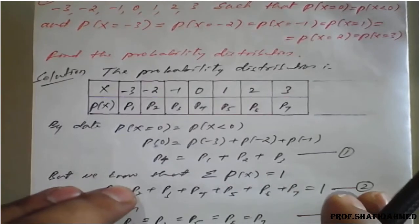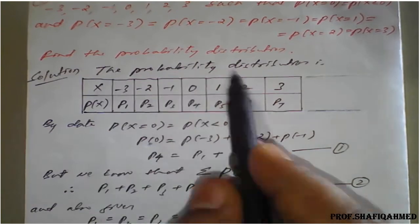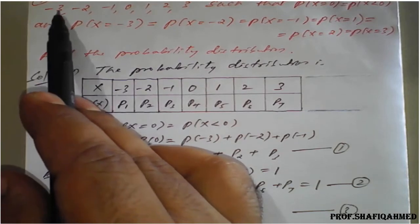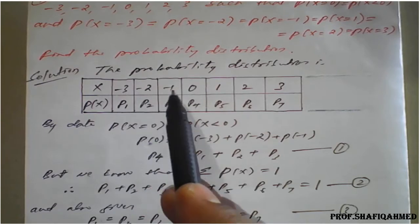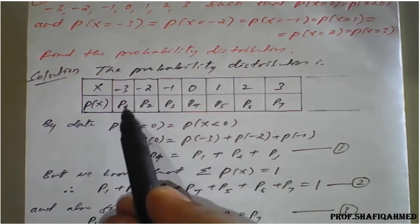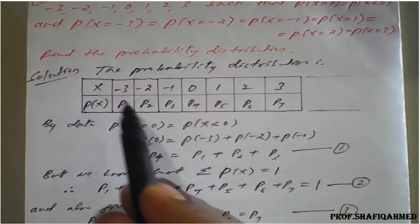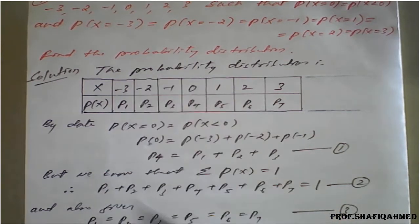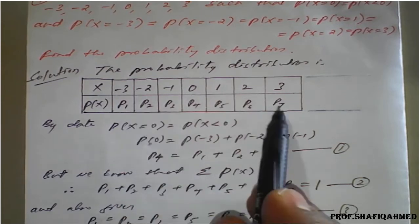This is an important and different kind of question. The probability distribution table has values of X: minus 3, minus 2, minus 1, 0, 1, 2, 3. Since we do not know the respective probabilities of these values, we will consider them as P1, P2, P3, P4, P5, P6, P7 in general.